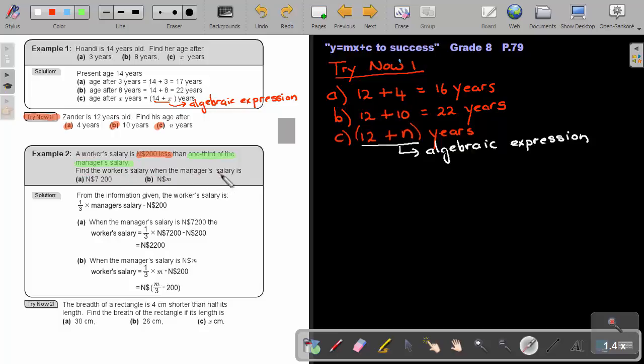So find the worker's salary when the manager's salary is 7200. So basically, I just substitute there 7200. Now, due to this, that all these numbers, I can simplify it. So I can press this on my calculator. I will get 2,400, and then if I subtract the 200, I will get 2,200. But now, when the manager's salary is M, so now I substitute not 7200, I substitute the value of M. I cannot simplify it to a single number because I do not know the value of M.